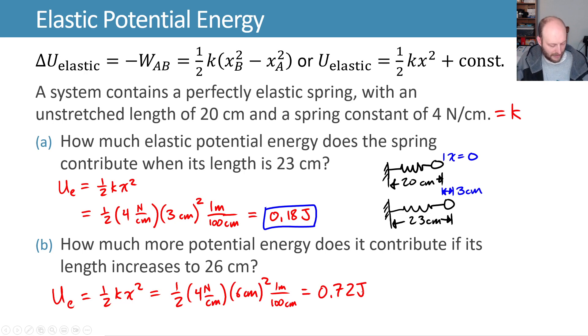So the amount of additional potential energy it contributes: 0.72 joules minus the original potential energy it had at the 3 cm stretching of 0.18 joules gives us 0.54 joules worth of additional potential energy. So how much more potential energy? 0.54 joules more potential energy.